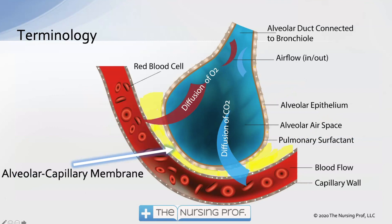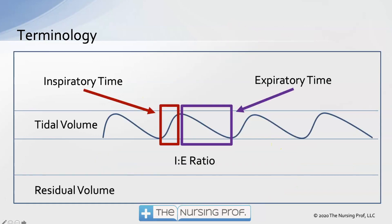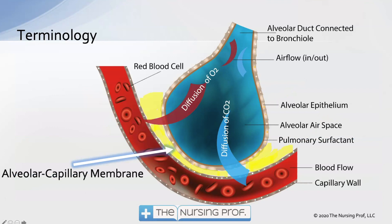Additional terminology includes the alveolar capillary membrane, highlighted in yellow on the diagram. We have an alveolus, a blood vessel underneath showing the blood flow and capillary walls. This is one alveolus up against one capillary, allowing for the movement of oxygen and CO2 in and out of the vasculature and the alveolus.